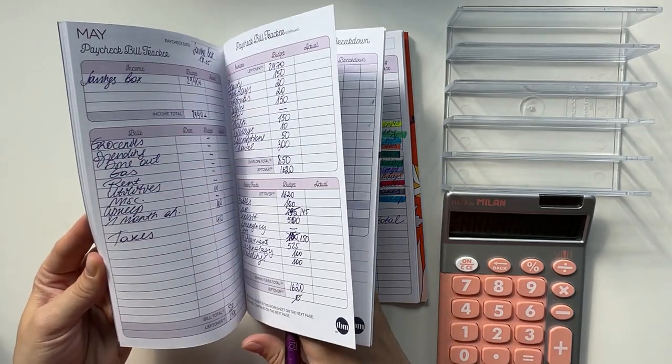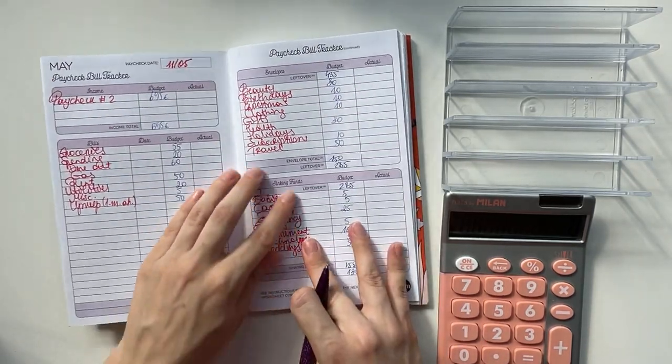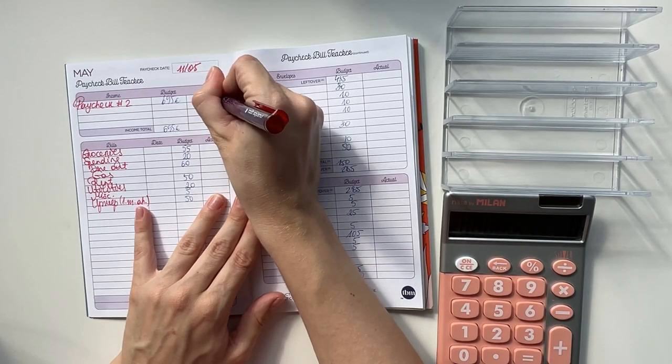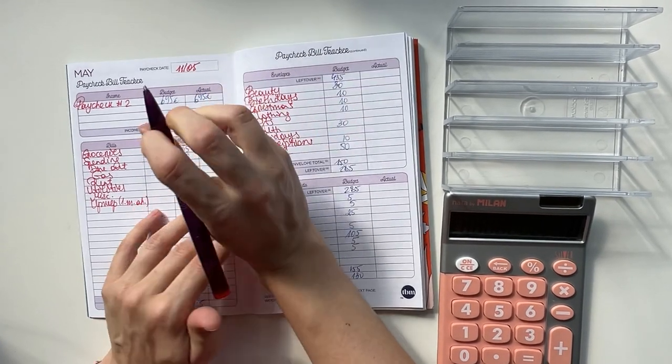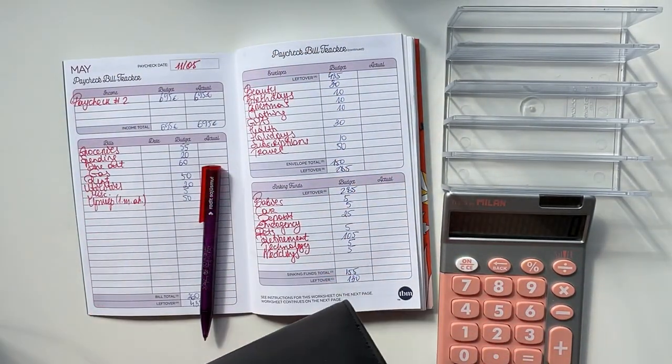Let's close out last week's budget and open up this week's budget. Last week we had a total of 695 euros to work with, and that's what we did for cash envelopes and bills.